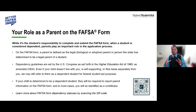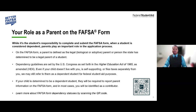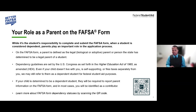When identifying who is a contributor and who is a parent, we define a parent as the biological or legally adopted parent of the student completing the form. These guidelines are set by Congress and outlined in the Higher Education Act of 1965. For dependent students, they will need information from either one or both parents, depending upon three factors: dependency status, marital status, and tax filing status.